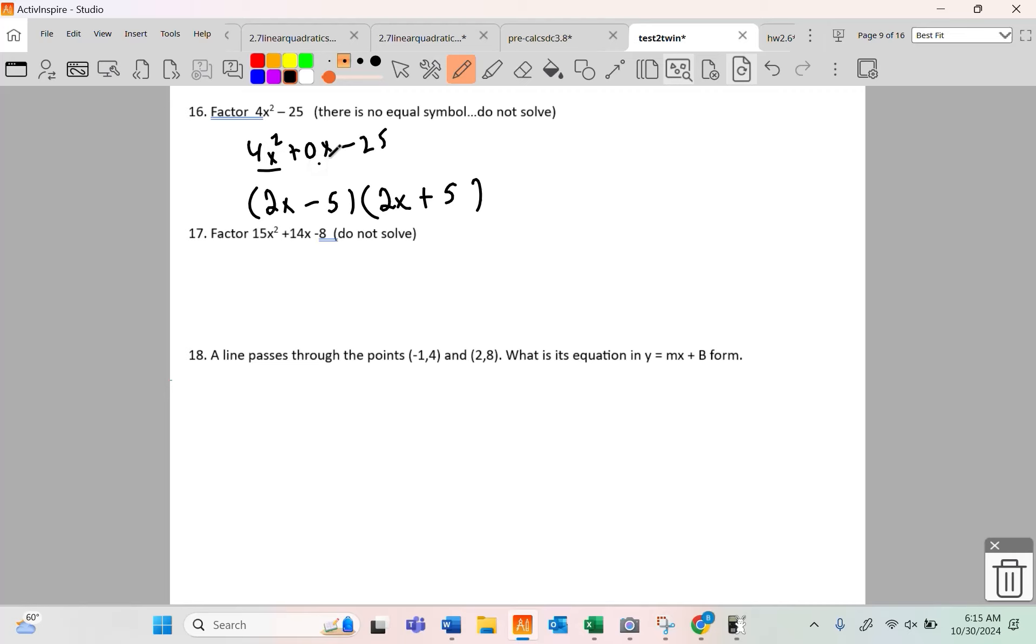Factor 15x squared plus 14x minus 8, do not solve. There's lots of ways to create the 15. You could use a 15 and a 1, or you could use a 3 and a 5. I'm going to go with a 3 and a 5. So I've created the first piece. Now I'm going to try to create the second piece. It's probably something along lines of 4 and 2. Now the outside is going to make 20x, the inside is going to make 6x. And by gosh, 20 minus 6 is 14. I need a positive 20 and a negative 6. The difference between me doing this and y'all doing it is I know how to add and subtract pretty quick. You're working on deficit skills.